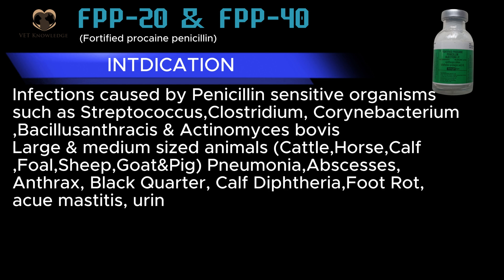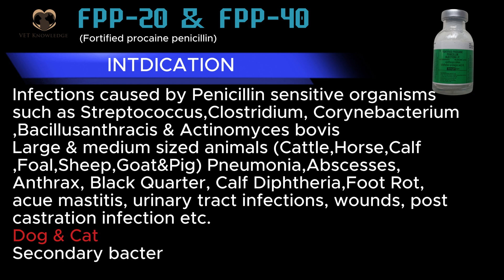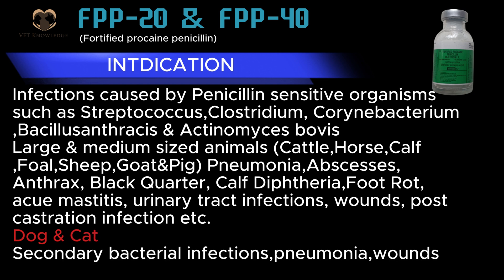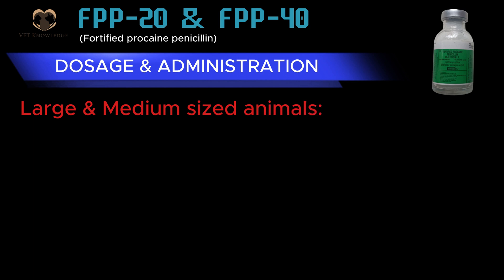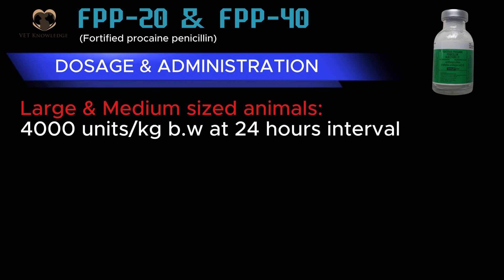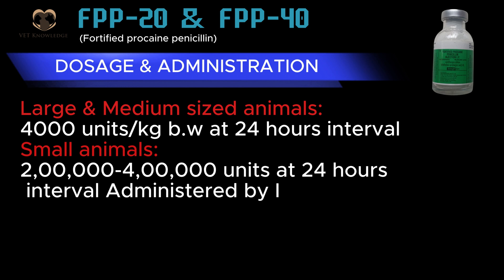Also indicated for actinomastitis, urinary tract infections, wounds, and post-castration infections. In dogs and cats: secondary bacterial infections, pneumonia, and wounds. Dosage and administration: large and medium-sized animals 4,000 units per kg body weight at 24-hour intervals; small animals 200,000 to 400,000 units at 24-hour intervals administered by intramuscular route.